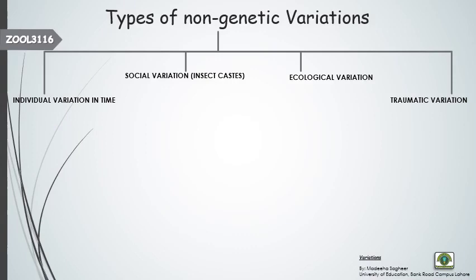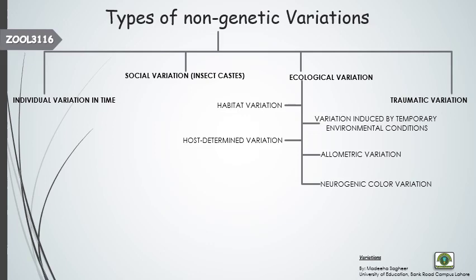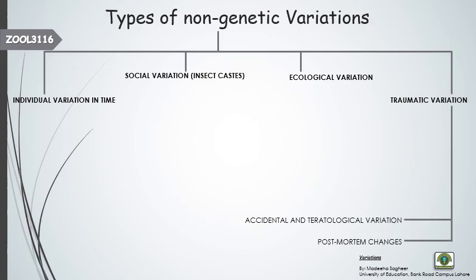We can divide non-genetic variations into four different types: individual variation in time, social variations, ecological variations, and traumatic variations. Individual variations in time can be further divided into age variation, seasonal variation of an individual, and seasonal variation of generations. Ecological variations can be classified into habitat variations, variations induced by temporary environmental conditions, host-determined variations, allometric variations, and neurogenic or color variations. Traumatic variations can be divided into accidental and teratological variations, and post-mortem changes.